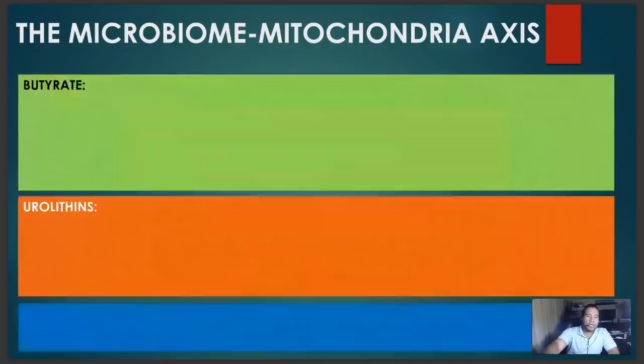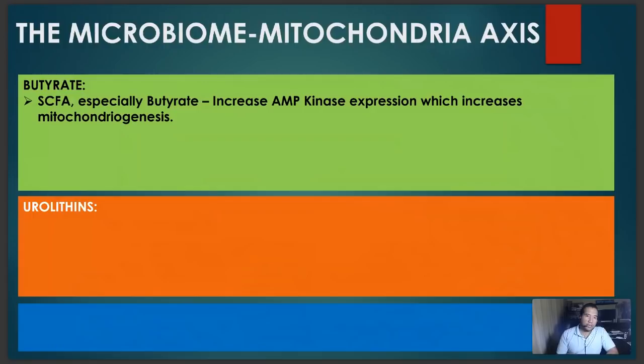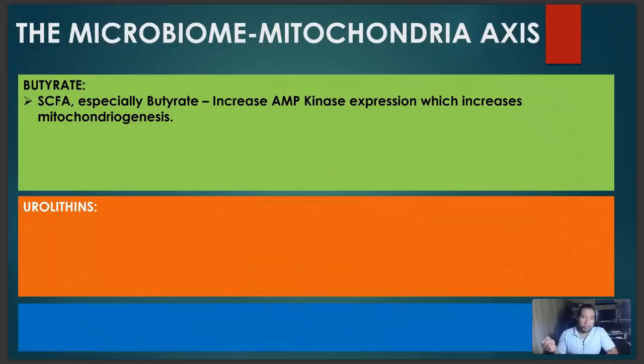With butyrate specifically, short-chain fatty acids — especially butyrate — increase something called AMP kinase, and AMP kinase actually increases mitochondrial biogenesis, which is the production of more mitochondria within the cell structure. AMP kinase is one of the most potent inducers of mitochondrial biogenesis, and it is upregulated by the presence of butyrate. Butyrate is also the main energy source for the mitochondria in our colonocytes — the entire colon and all of its functions are dependent on butyrate as the number one fuel.